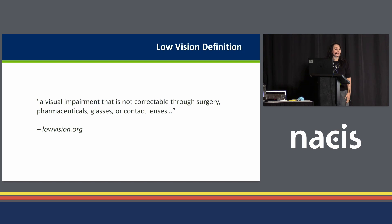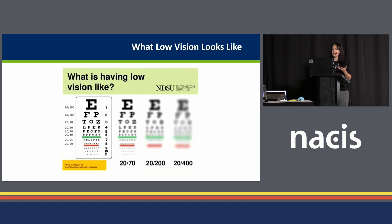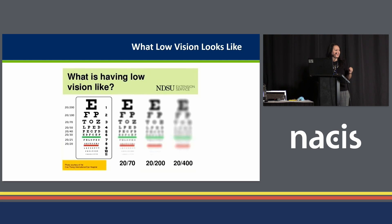Low vision — the other impairment we talked about — is a visual impairment that's not correctable through surgery, pharmaceuticals, glasses, or contact lenses. This 20/70 example shows what a person with low vision may see. There are a lot of other pieces within the low vision category, but this is the piece we can address in design.